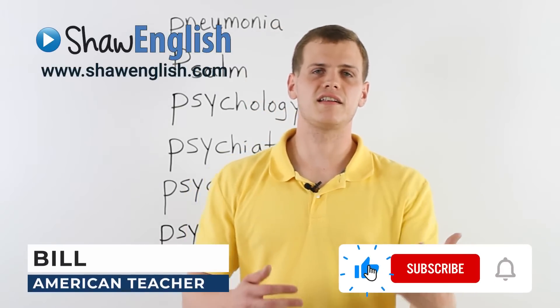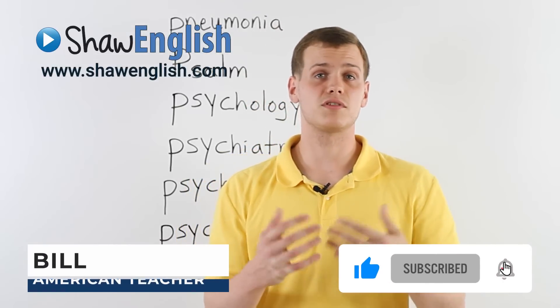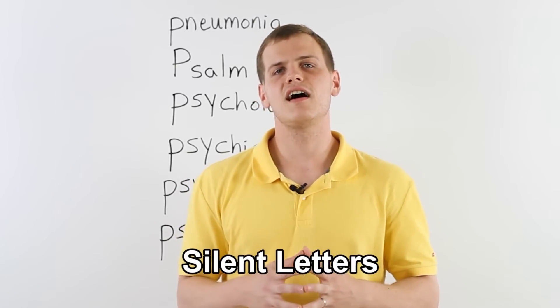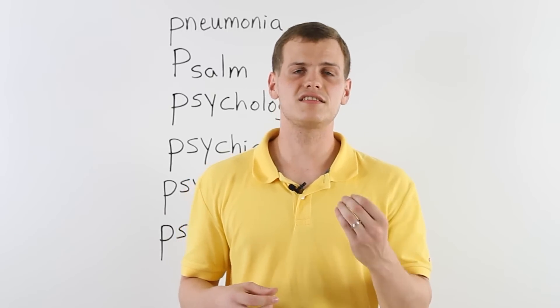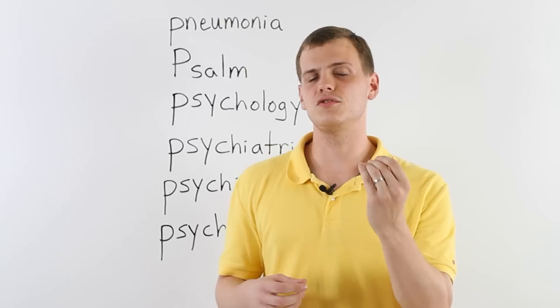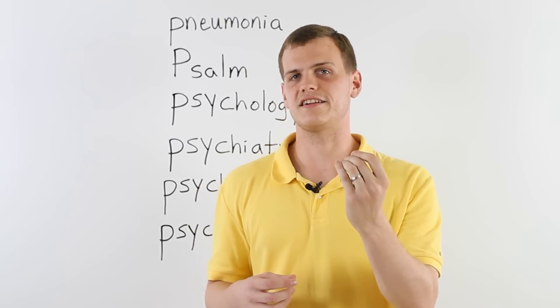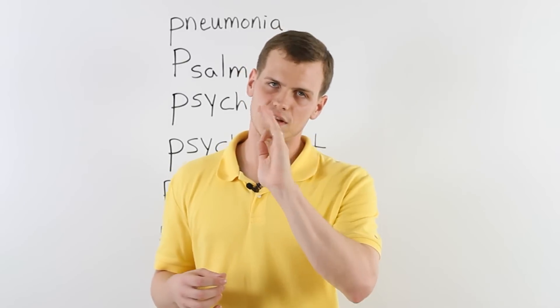Hi, this is Bill and I'm here to help you with some pronunciation. Sometimes in English, we have words that have letters we don't pronounce. We call them silent letters. And right here, I'm going to tell you about how the letter P can sometimes be silent. This happens when the word begins with the letter P, but then it is followed by another consonant. This is when we ignore the letter P and we do not actually pronounce that letter. It is only silent. So let's look right here.